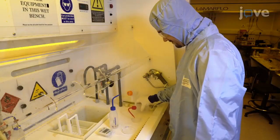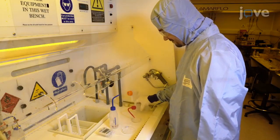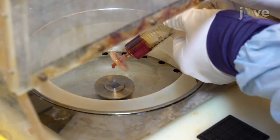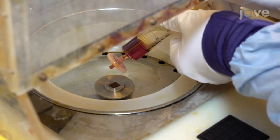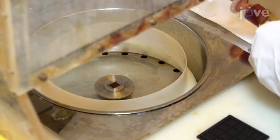Clean the device with acetone and isopropyl alcohol. Next, form ohmic pads to make electrical contact between the metal and two-dimensional electron gas by spinning photoresist on top of the device.